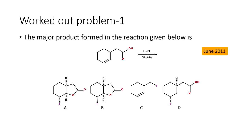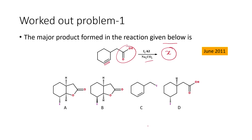The first problem: the major product formed in the reaction given below. We are given an alpha-beta unsaturated carboxylic acid — an alkene and a carboxylic acid — which undergoes reaction with iodine and potassium iodide, followed by reaction with sodium carbonate, giving some product. We need to find what that product is from four choices.